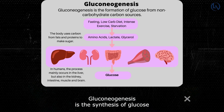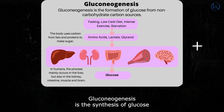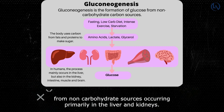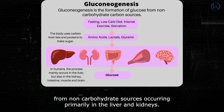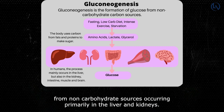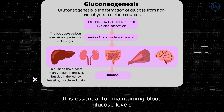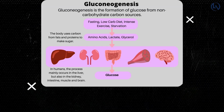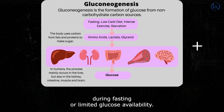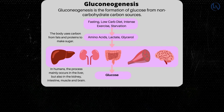Gluconeogenesis is the synthesis of glucose from non-carbohydrate sources, occurring primarily in the liver and kidneys. It is essential for maintaining blood glucose levels during fasting or limited glucose availability.